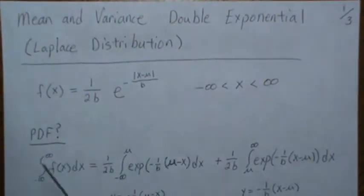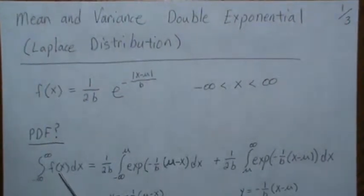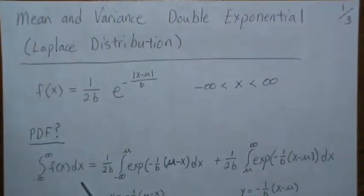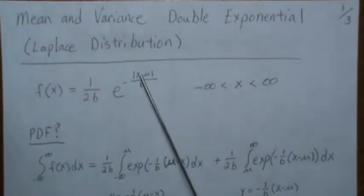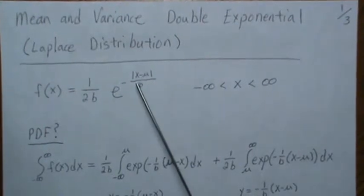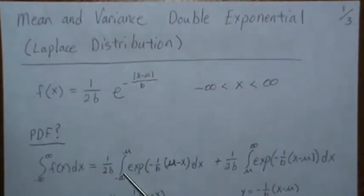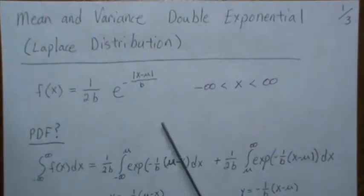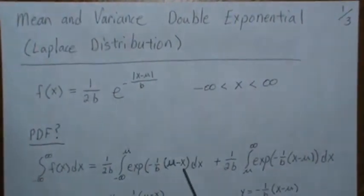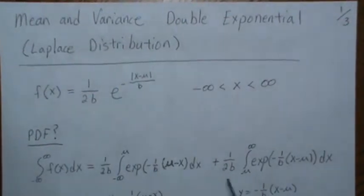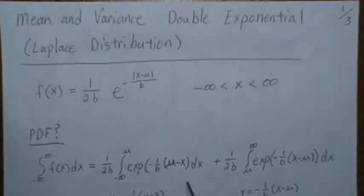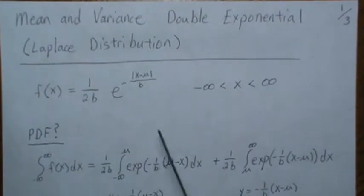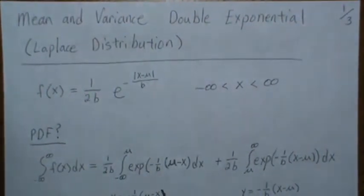First let's show it's a PDF — that means we integrate the density over all possible values and it integrates to one. Since it's an absolute value, we have to split it where it's positive or not. If we're below mu, we take mu minus x to make it positive; if we're above mu, it's x minus mu. So we integrate over these two different regions.